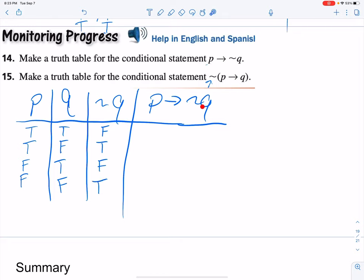Now, for my P implies negation of Q, I'm going to go P implies the negation of Q. So true implies false. My first one is going to be false. True implies false is always false. Next one, true implies true. That one should be true.